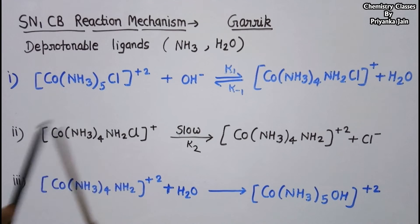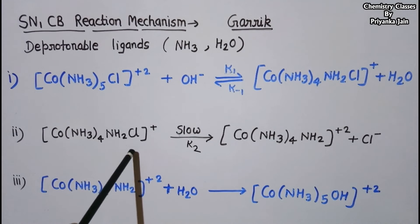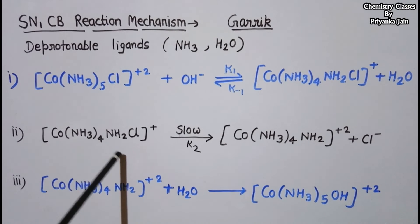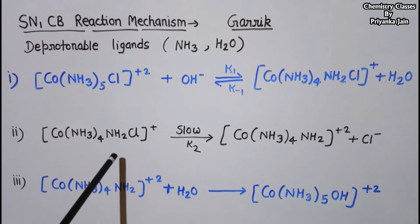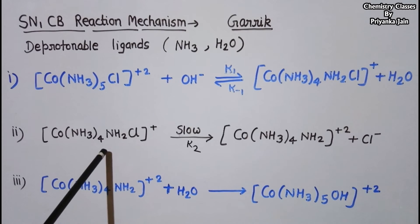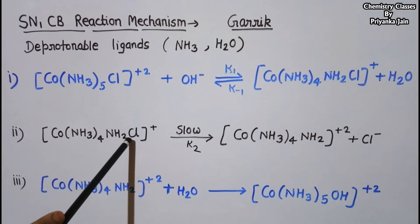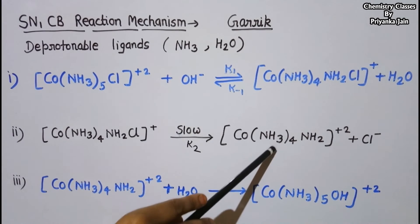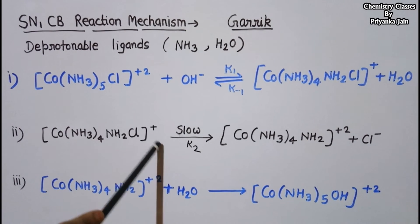In the second step, the Cl⁻ ion migrates from this complex. This happens because the NH₂⁻ ligand is a pi-donor ligand that forms a pi complex with the metal. Pi complex formation is favored in the five-coordinated state compared to the seven-coordinated state, which enhances the migration of the Cl⁻ ion. The Cl⁻ ion migrates to give [Co(NH₃)₄(NH₂)]²⁺ plus Cl⁻. This is the slow, rate-determining step.